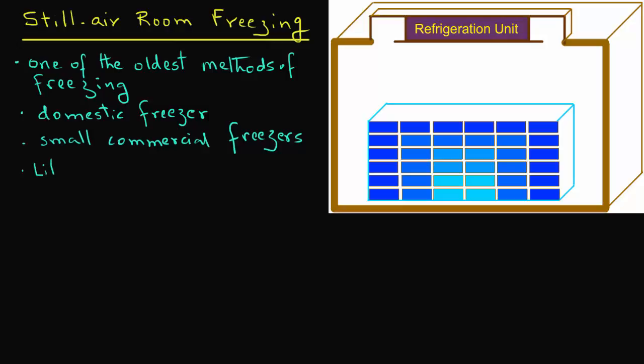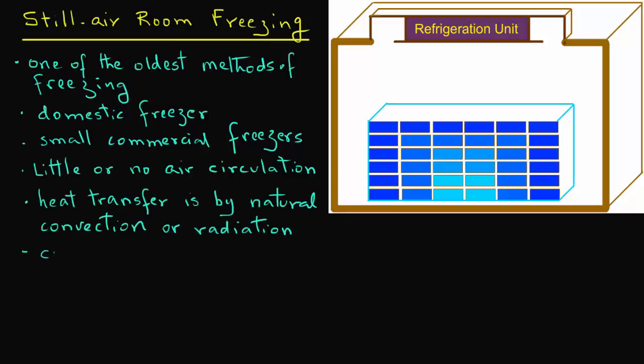There are two issues here. One is that there is little or no air circulation, and heat transfer is by natural convection or radiation. The convective heat transfer coefficient in such rooms is between 5 and 10 watts per square meter Kelvin.